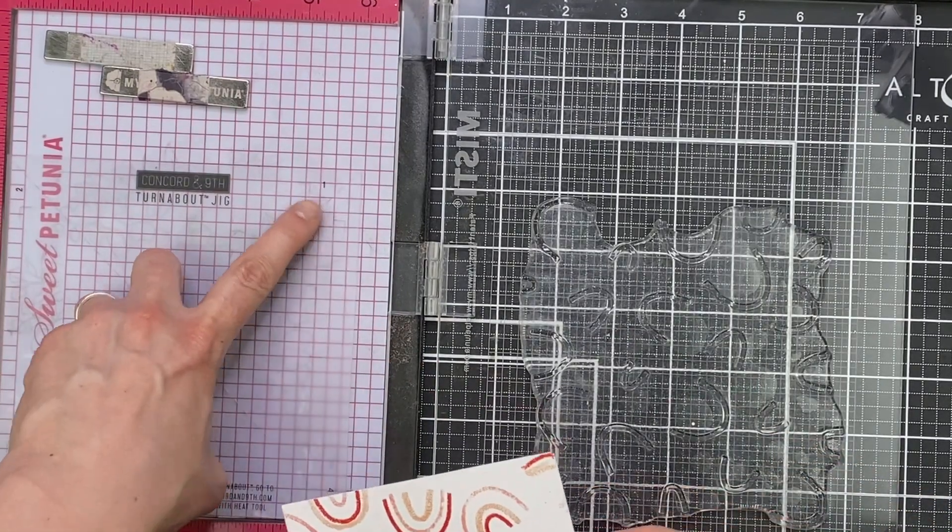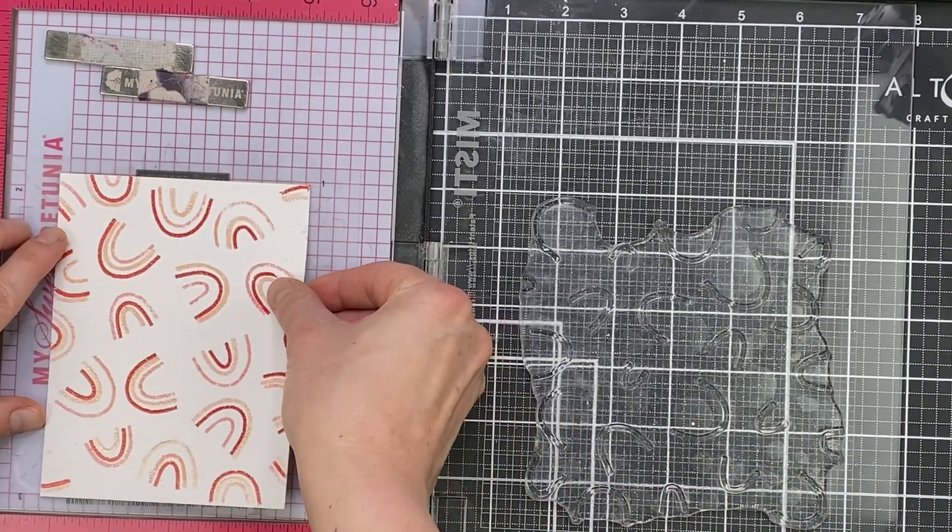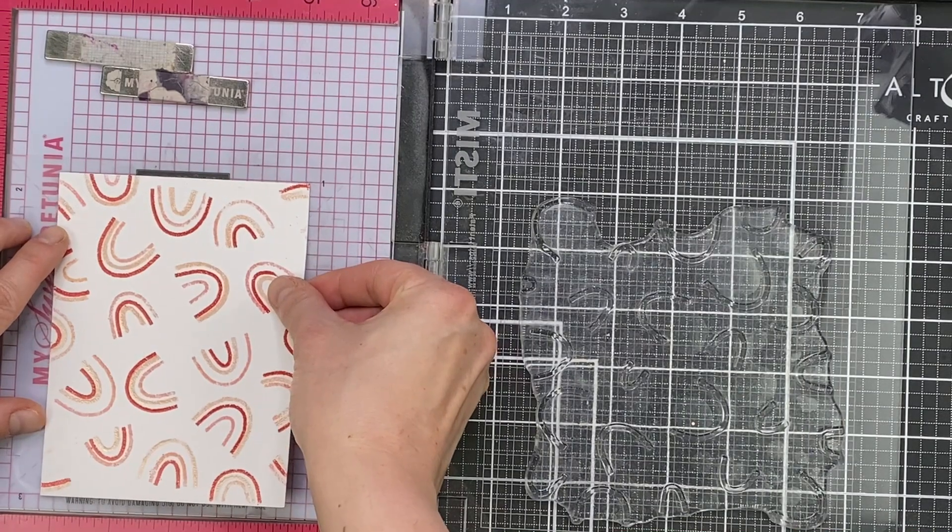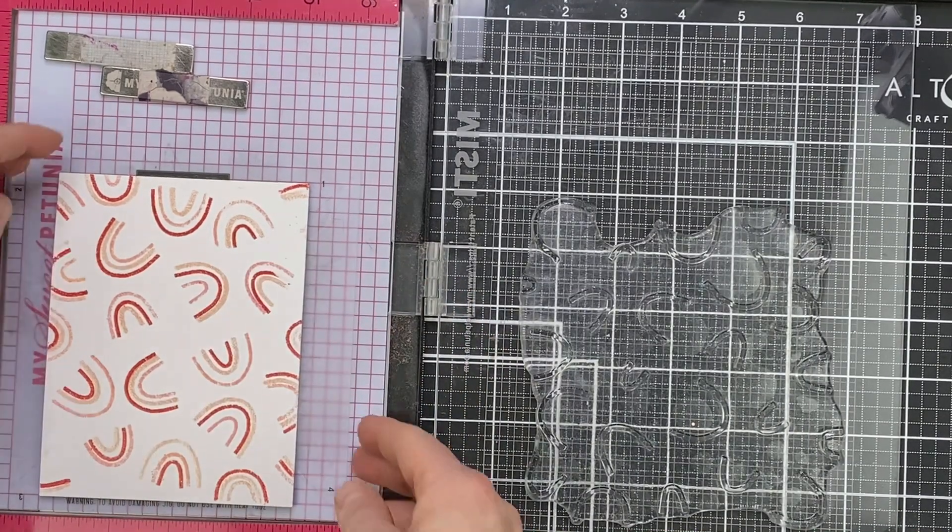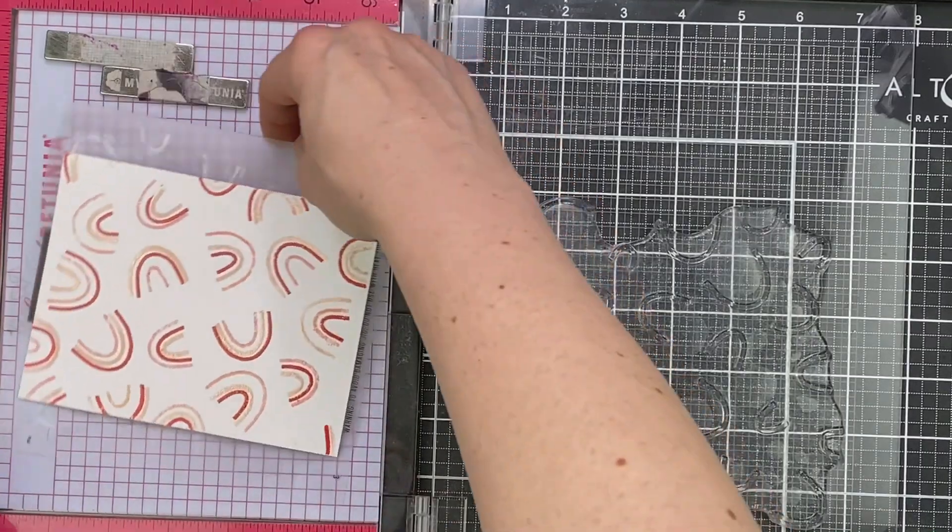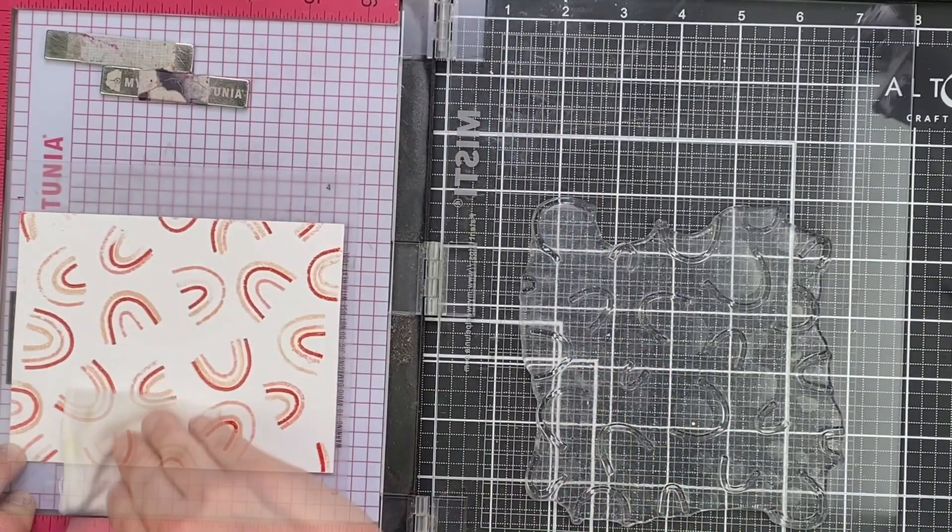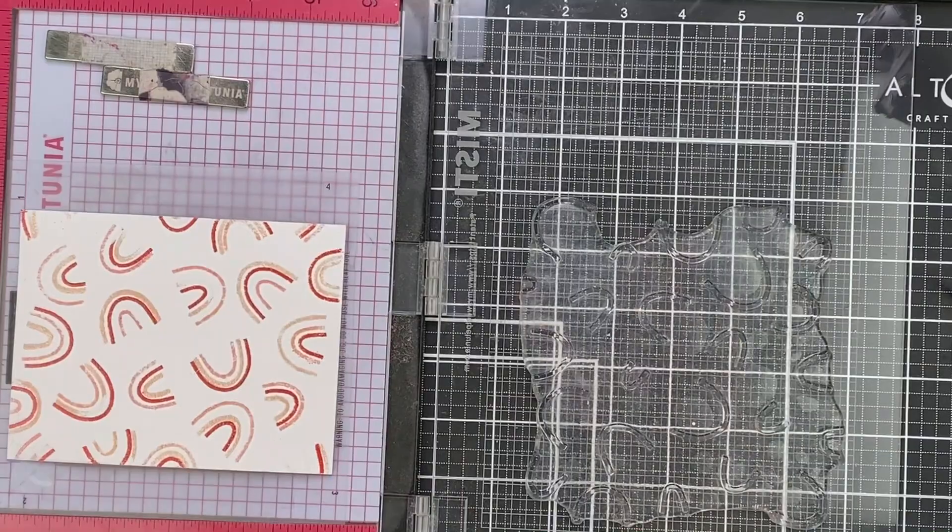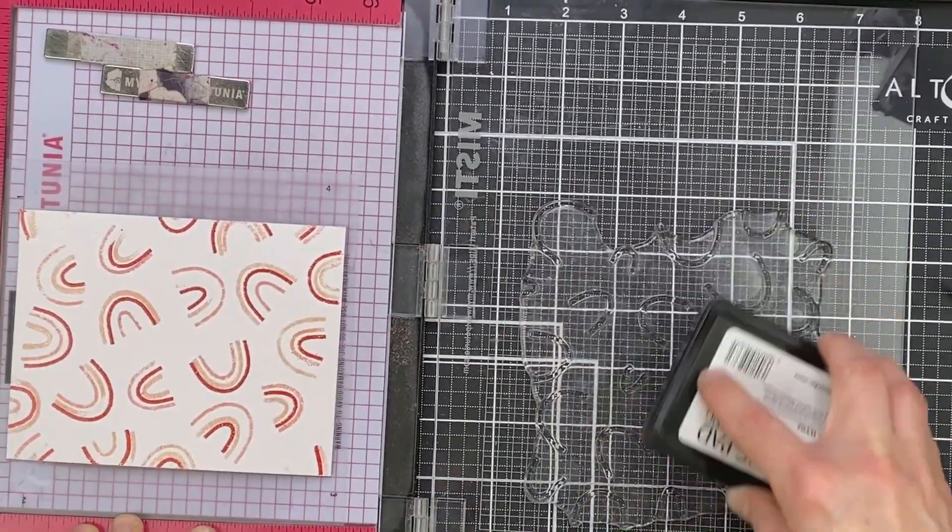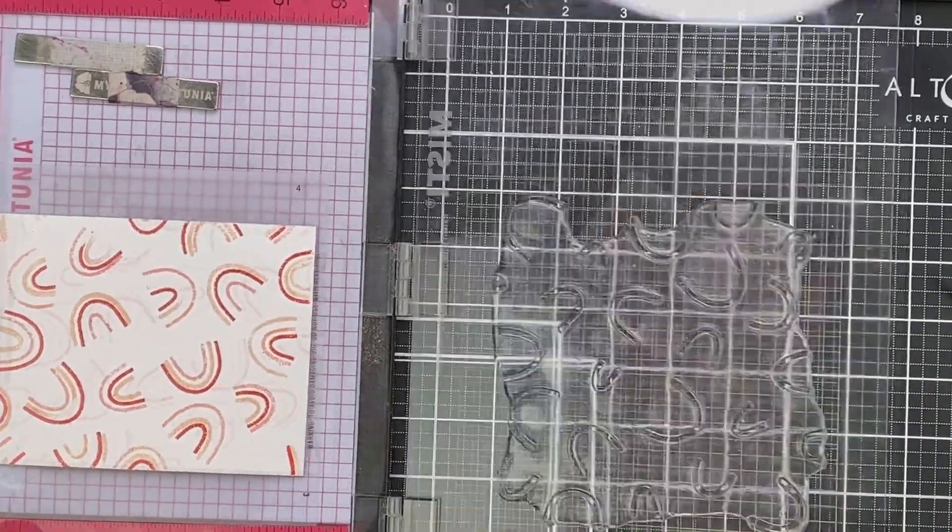And I've heated that up again with my heat tool, and then you'll see I'm going back again to the number one, lining up my corners with those notches on the jig, and then I'm going to turn it all the way back to number four in the top right corner to finish my stamping. I'm going to ink it up, stamp it again the last time.